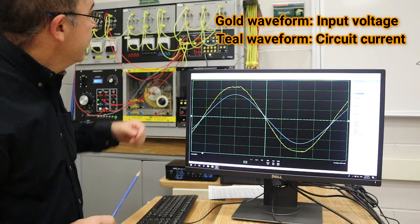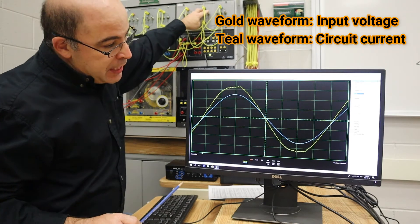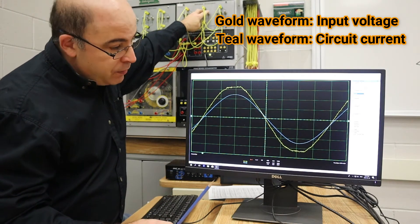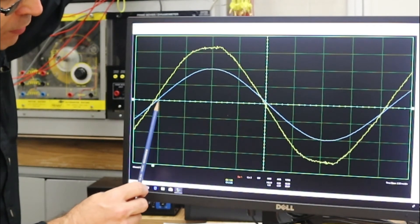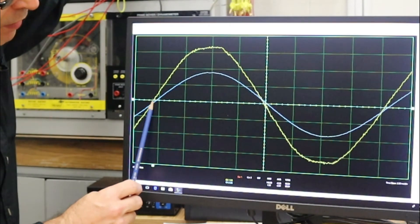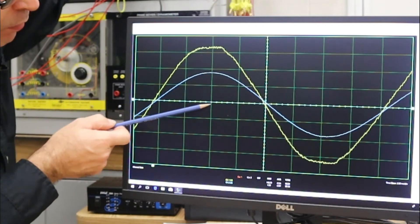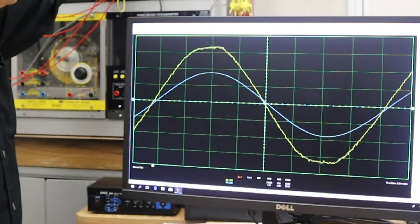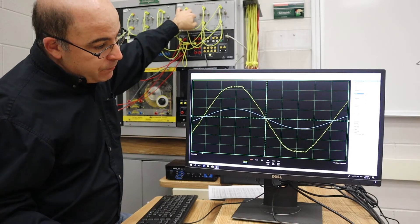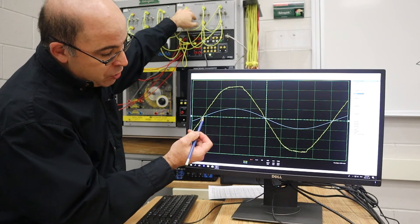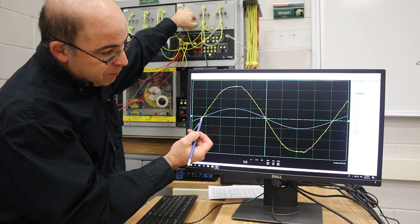So as I take resistance out of the circuit, what we see is that the relationship between the voltage and current remains unaffected. What's happening is the amplitude of the current is actually lowering because the relationship between the voltage and current is unaffected.